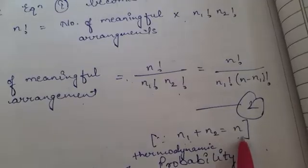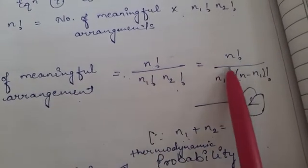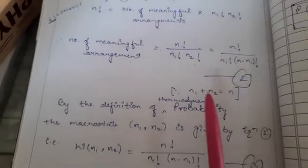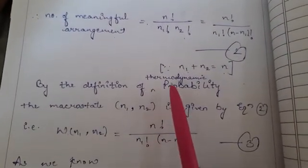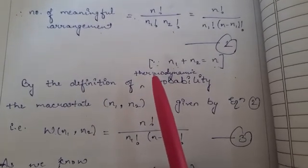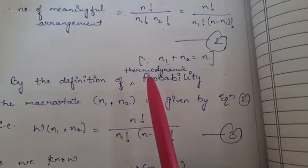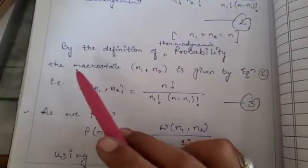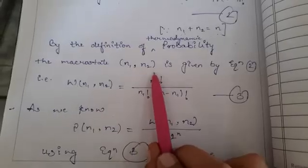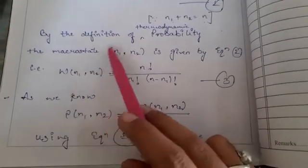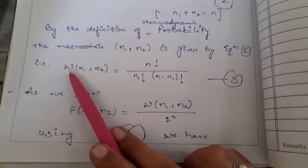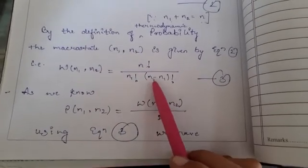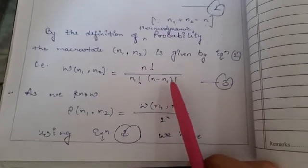Since N1 plus N2 equals N, we can write this as equation number two. From the definition of thermodynamic probability: the number of meaningful arrangements in a given macrostate equals the number of microstates in that macrostate — this is known as thermodynamic probability. So the thermodynamic probability W for macrostate (N1, N2) is given by W equals N factorial divided by N1 factorial into N minus N1 factorial — write this as equation number three.